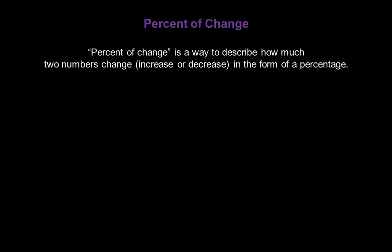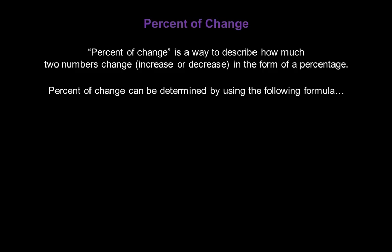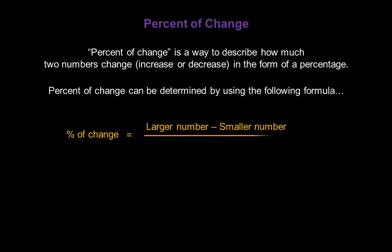Percent of change is a way to describe how much two numbers change — increase or decrease — in the form of a percentage. Percent of change can be determined by using the following formula: percent of change equals the larger number minus the smaller number, divided by the original number, or the number that's changing. Then we take that fraction and multiply it by 100.